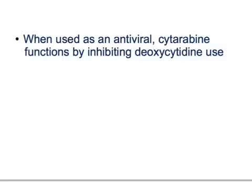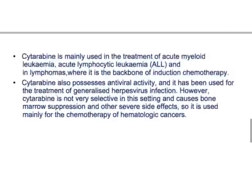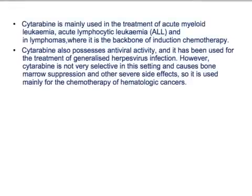When used as an antiviral, Cytarabine functions by inhibiting deoxycytidine use. Cytarabine is mainly used in the treatment of acute AML and ALL, and in lymphomas where it is the backbone of induction therapy. Cytarabine also possesses antiviral activity and has been used for the treatment of generalized herpes virus infection. However, Cytarabine is not very selective in this setting and causes bone marrow suppression and other adverse effects. It is used mainly for chemotherapy of hematological cancers.